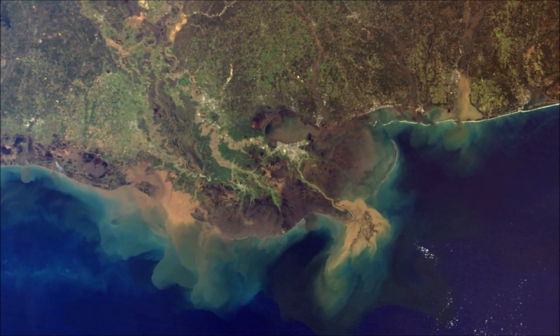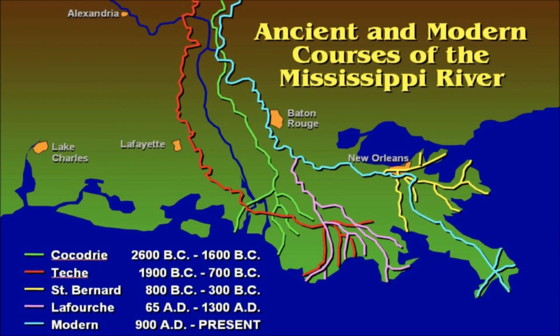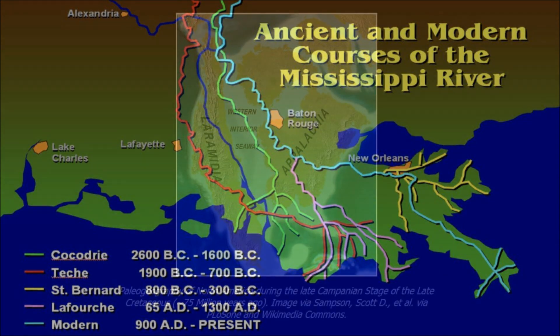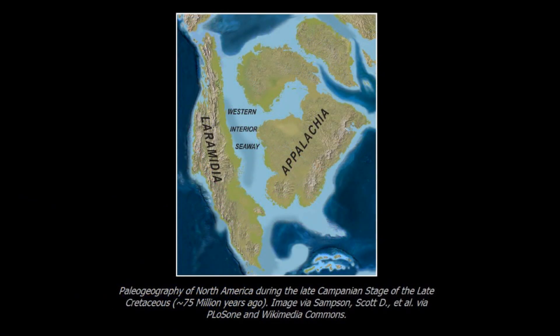Mud in the Delta isn't used by any scientists as a dating method to date the age of the earth. We can actually trace the route of the ancient Mississippi River going back to before Mr. Conover thinks Noah's flood occurred. We also know that long ago the Mississippi River didn't even exist — this is what North America looked like about 75 million years ago.